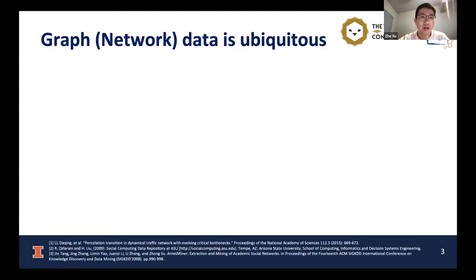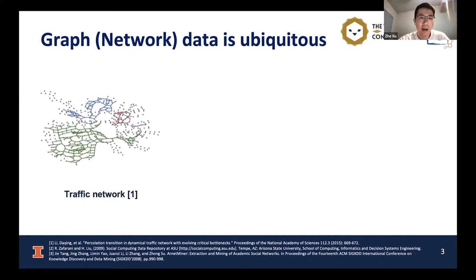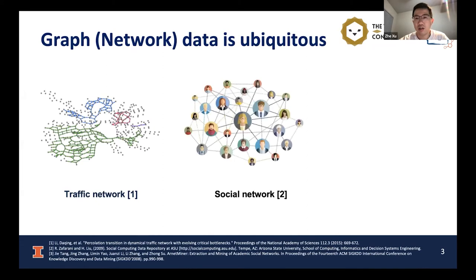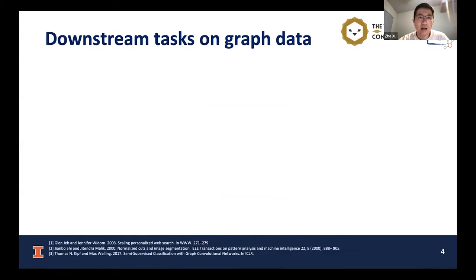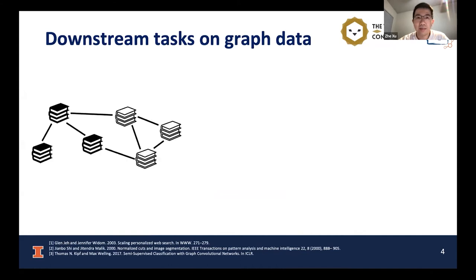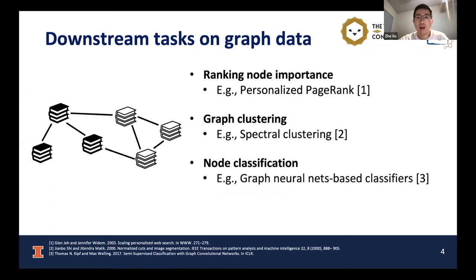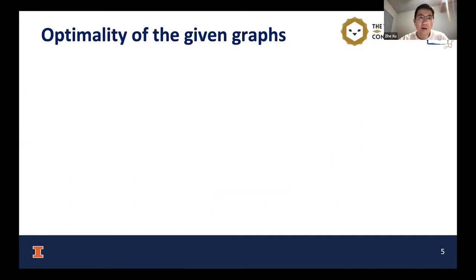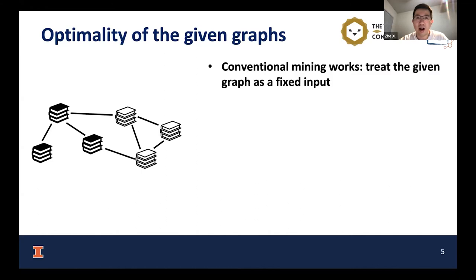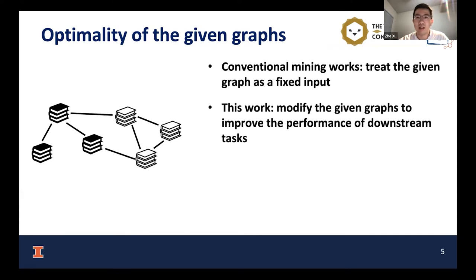Graph data is ubiquitous and we often see it in real-world applications such as traffic networks, social networks, and citation networks. There are versatile graph mining tasks over graph data, such as ranking tasks by personalized page rank, clustering tasks with spectral clustering, and node classification tasks with graph neural network-based classifiers, and many more. While conventional graph mining tasks always treat the given graph as a fixed input, in this work we consider whether we can modify the given graph to improve performance on various downstream tasks.